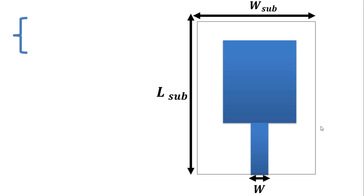Hi everyone. In this new video I will show you the method used to find dimensions of any microwave structure in function of wavelength. We have two cases: wavelength in free space, lambda zero, and guided wavelength in a substrate with electric constant.